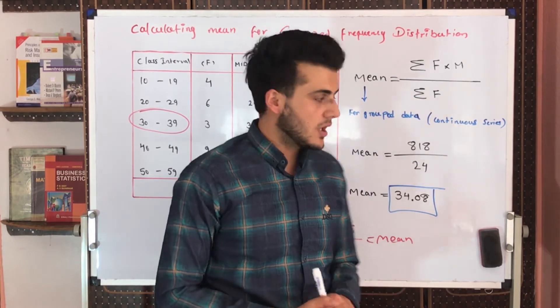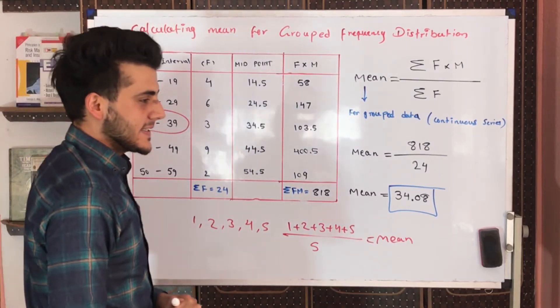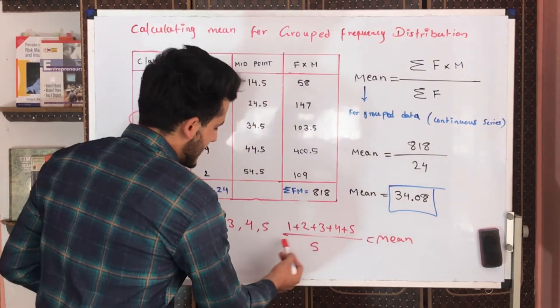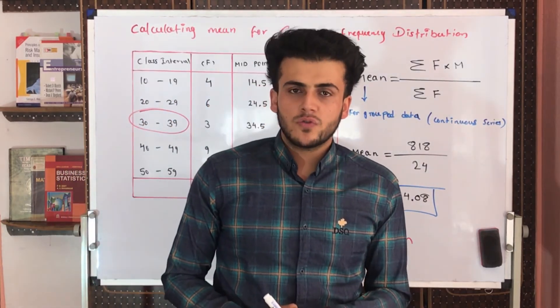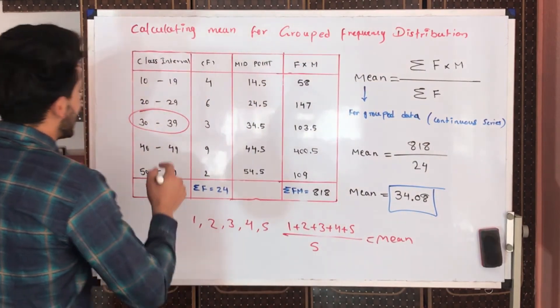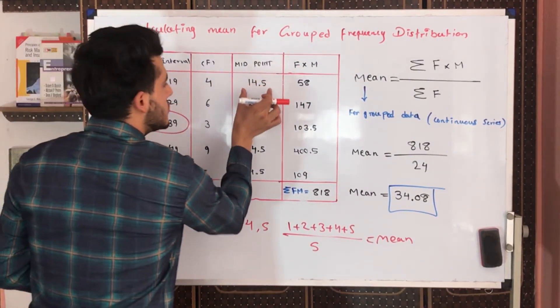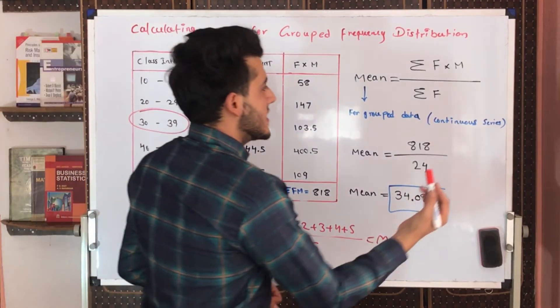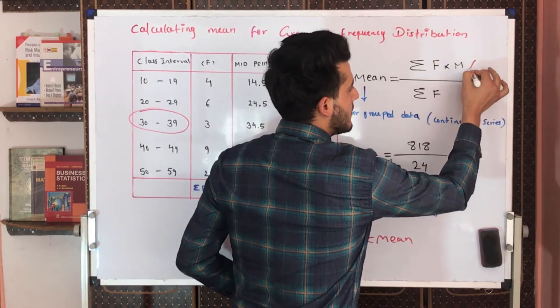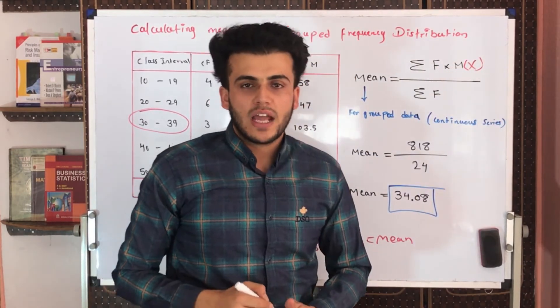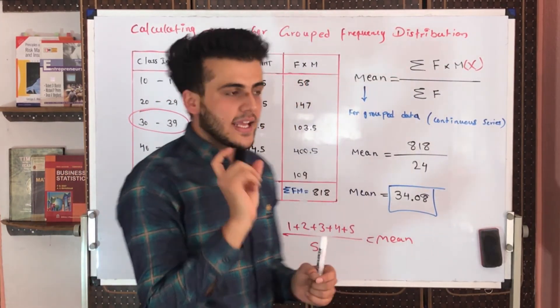This is very much easy and understandable. If we have discrete series - individual series is very much easy, discrete series is also very much easy because we will be given the numbers, not the class interval. So we do not need to find the midpoints in here. Instead of midpoint in the formula, we will be having x because there would be no need for midpoint.